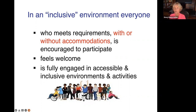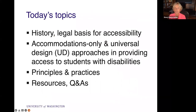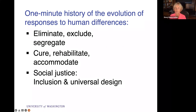Just a quick example: if your introductory video in your online course, where you spend three or four minutes welcoming your class, is not accurately captioned, then it's not going to be accessible to some people, including people who are deaf. It's not going to make a student who is deaf feel welcome in your class. It's pretty clear to them that you haven't thought about accessibility in a proactive way. So we'll talk about history, the legal basis for accessibility, and the two approaches — accommodations only or universal design — for gaining access for students with disabilities, as well as principles, practices, resources, and Q&A. We're going to have 20 specific tips that you can use to make your course more accessible.